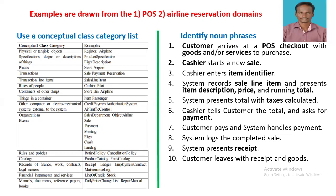The next category is catalog. For POS it is product catalog, and for airline reservation it is parts catalog. The next category is records of finance, work, contracts, and legal matters. Examples are receipt, land, license, employment contract, maintenance, and law. The next category is financial instruments and services, with examples such as line of credit and stock. The next category is manuals, documents, reference papers, and books. Examples include daily price change list and repair manual.